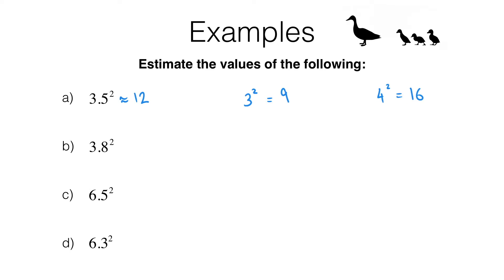Moving on to part b, we've got 3.8 squared. Now 3.8 is still between 3 and 4, so squaring it gives something between 9 and 16. But 3.8 is closer to 4 than to 3, so a sensible estimate would be a number closer to 16 — but not too close. I would estimate 14. Checking: 3.8 is bigger than 3.5, so 3.8 squared should be bigger than 3.5 squared, and 14 is indeed bigger than 12, so our answer is sensible.